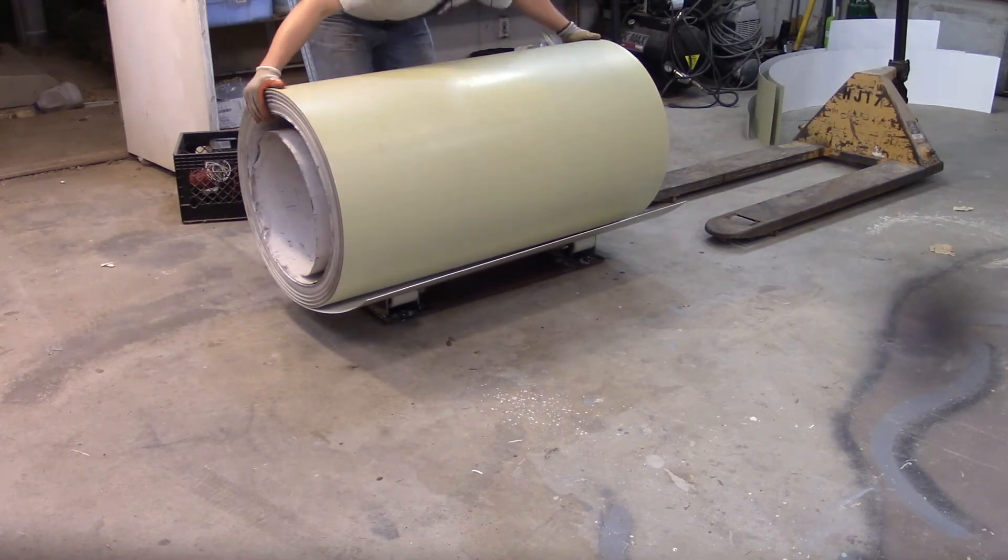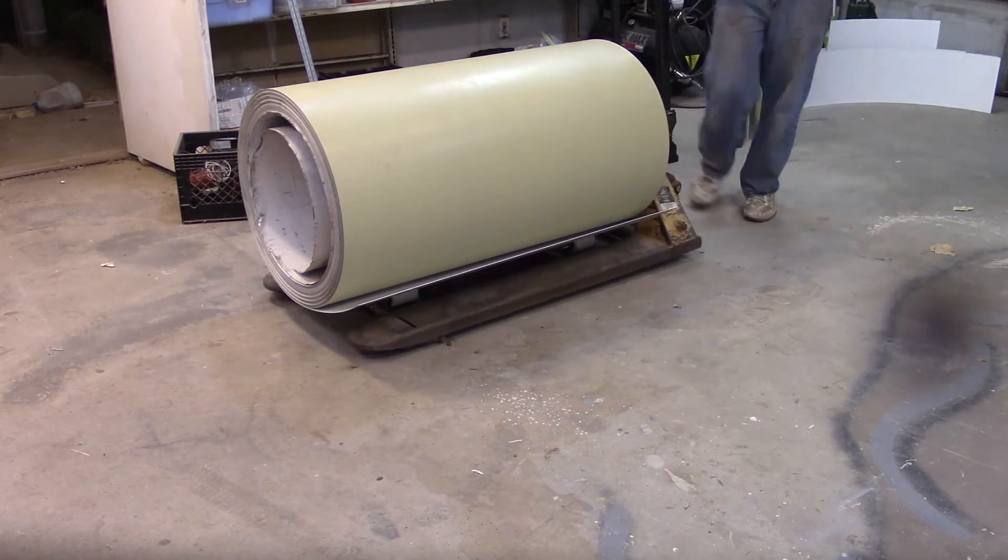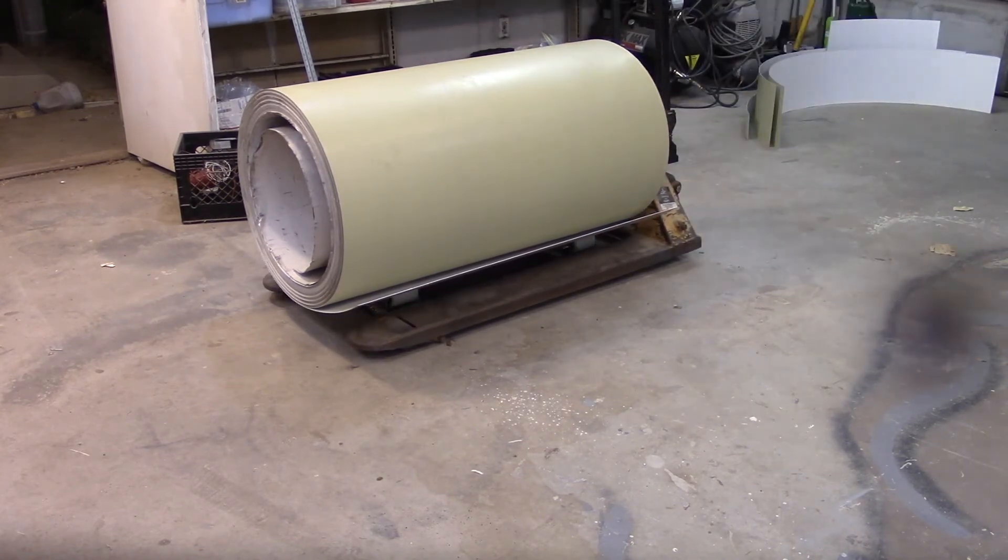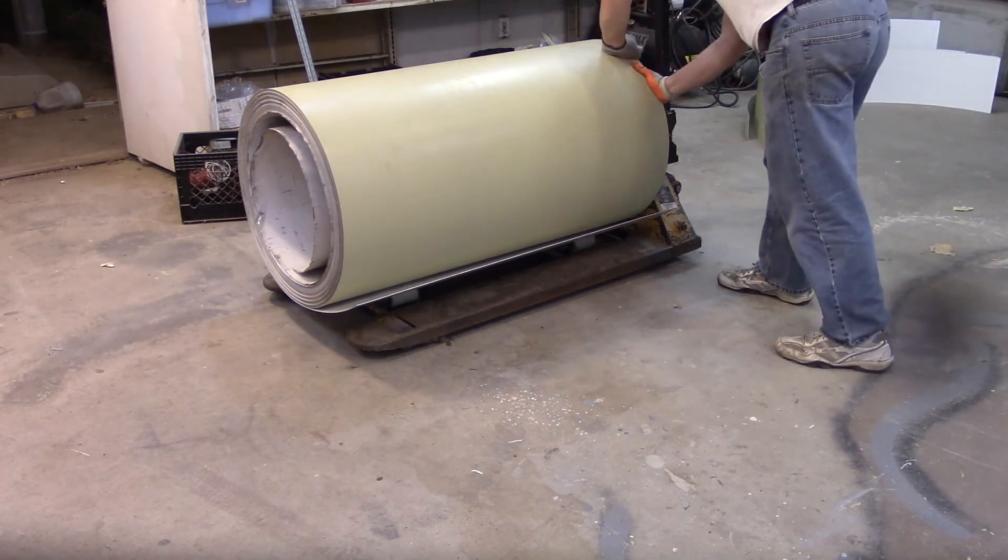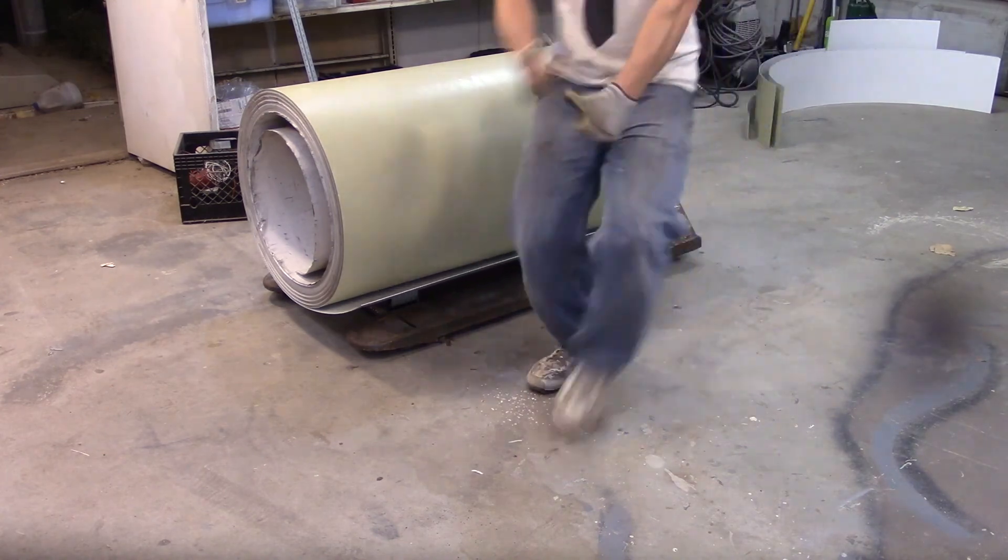Ha ha! Yes! That's 1,700 pounds on hard nylon rollers is really easy to move. I've been rolling my 3,600 pound baby all over the concrete to unroll it ever since it was a baby.